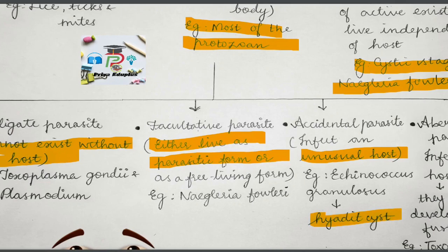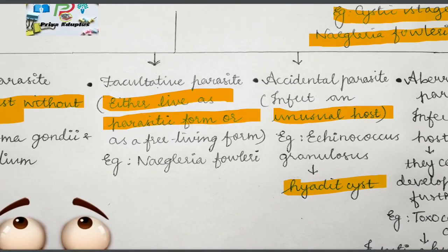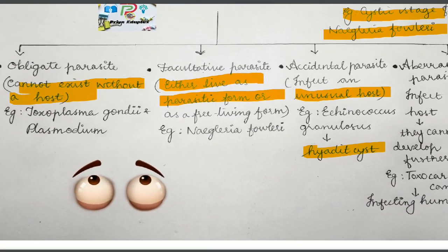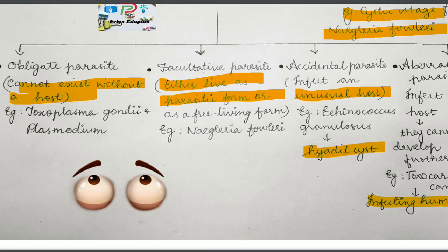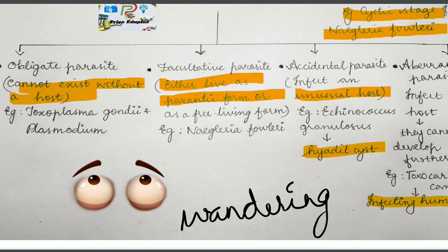Next is aberrant parasites. Aberrant parasites are parasites which infect a host where they cannot further develop. Example is Toxocara, which is a dog roundworm infecting humans. Aberrant parasites are also called as wandering parasites.